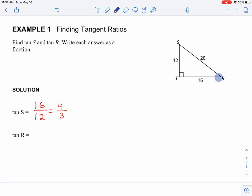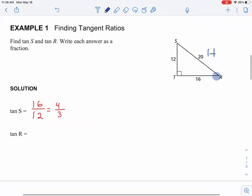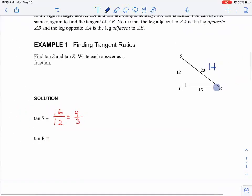And the reason I erase that is because now, my opposite side changes. The hypotenuse stays the same. The hypotenuse is still 20. But if I draw my arrow inside of angle R, 12 is now my opposite. And 16 is my adjacent.